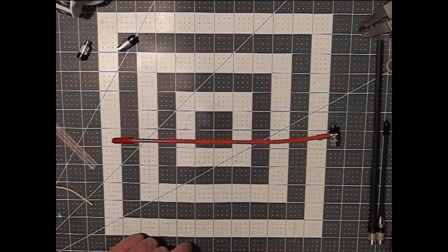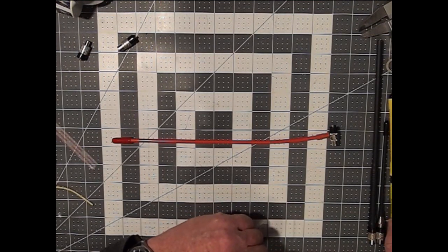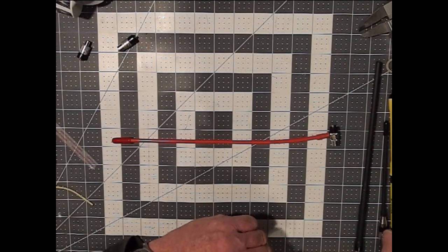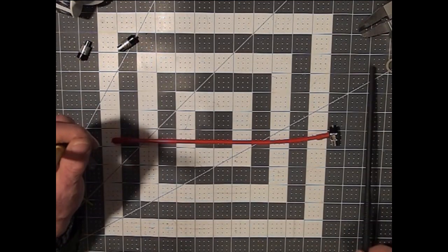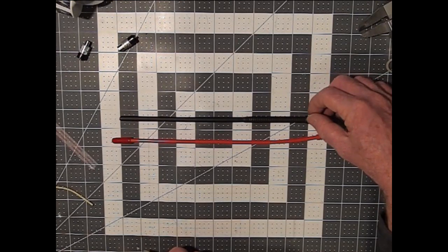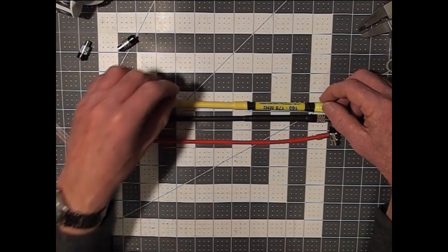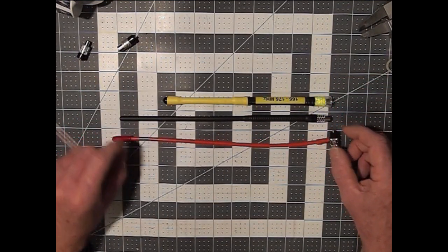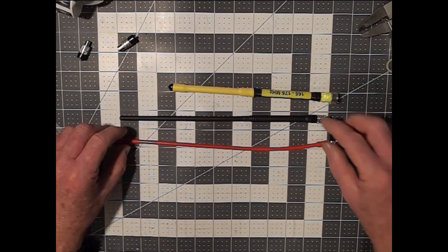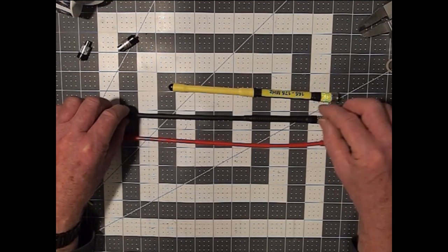But that distance is commonly dictated by not only the quarter wavelength of what you're achieving. So in other words, if this long antenna here represents 142 megahertz and this is 170, that would change. If you only use this one all the time, that would be a different length for your counterpoise than this one would be.